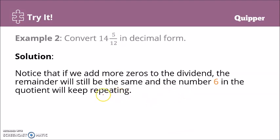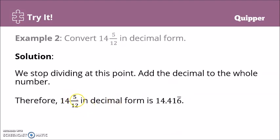Therefore, 14 and 5/12 in decimal form is 14.416 bar. Notice that we only converted 5/12 into decimal, which is 0.416 bar, and then added 14 to it. So that's 14.416 bar.